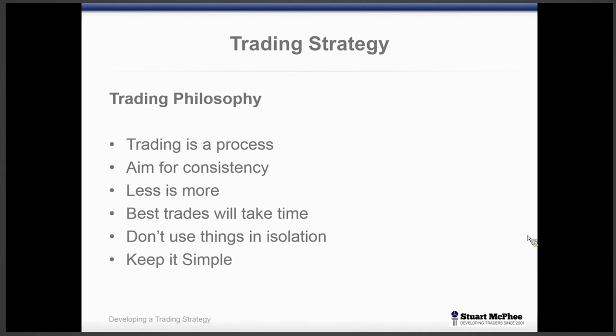I also believe in patience, and that the best trades actually do take time. Trading on daily charts, my medium-term system — the Altitude system — my best trades last well and truly beyond six months. I've run experiments over the years where I do a scan using MetaStock and find the rate of return of the top 50 or top 200 stocks over the last 12 months. People are amazed that there'll be stocks up 200% or 150%.